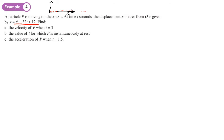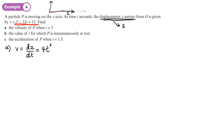Part a: find the velocity of P when t = 3. Because this is variable acceleration, velocity is the change in displacement over time. Note we're using x for displacement here — either x or s is common. We differentiate: t⁴ becomes 4t³, and -32t becomes -32, so velocity v = 4t³ - 32.